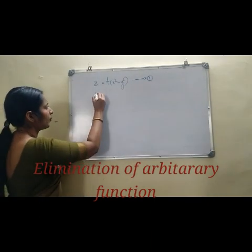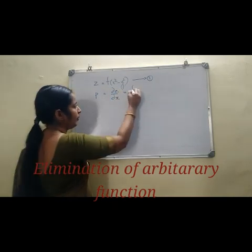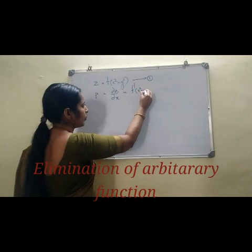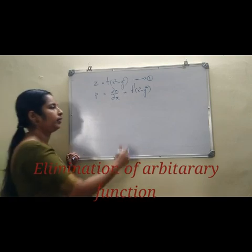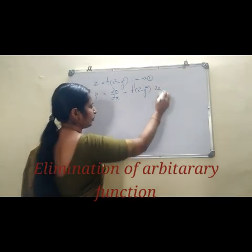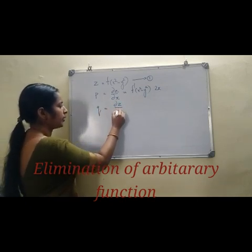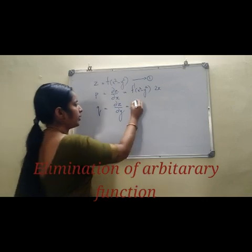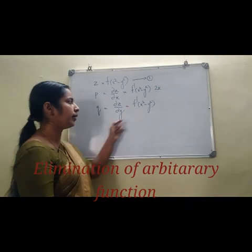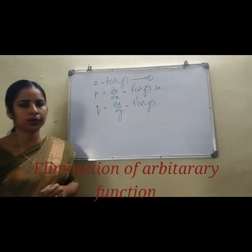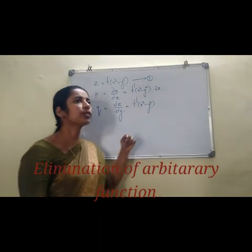What is p? p = dou z by dou x = F'(x² − y²) · (derivative of x² − y² with respect to x) = F'(x² − y²) · 2x. Next, what is q? q = dou z by dou y = F'(x² − y²) multiplied by the derivative of x² − y² with respect to y, which is −2y. So q = F'(x² − y²) · (−2y).